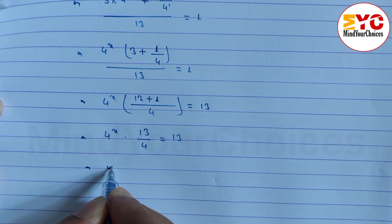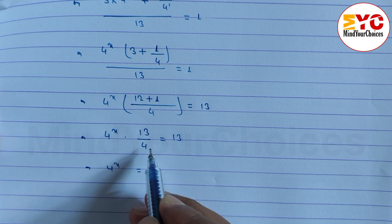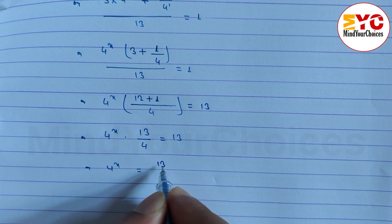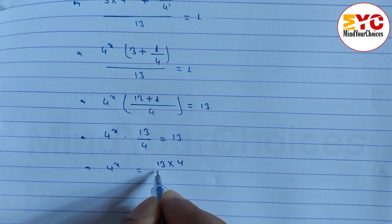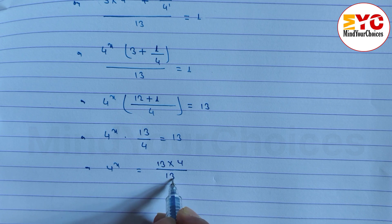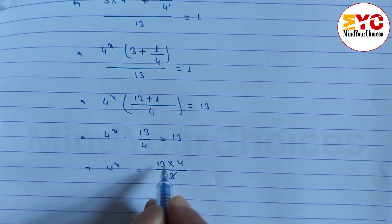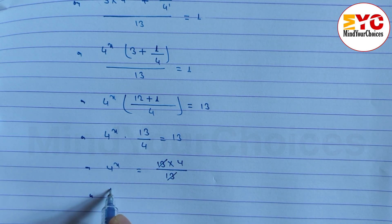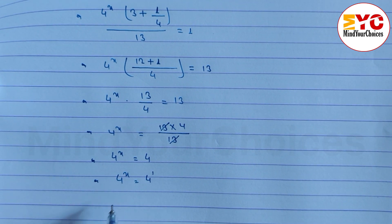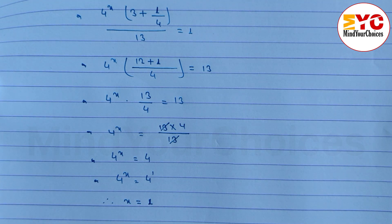Now cross multiply. 4 power x is equal to 13 into 4 divided by 13. You can see here 13 and 13 cancel. So we can write 4 power x is equal to 4, which is 4 power 1. Base is same and equal, so power is also equal. Therefore x is equal to 1, which is your answer.